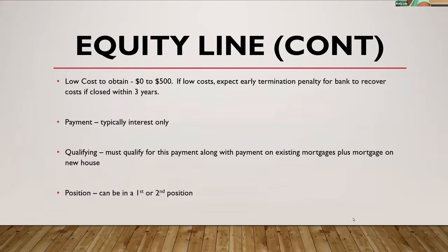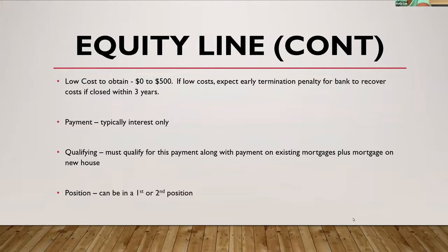Qualifying-wise, with the bridge loan option, you've got an interest-only payment on one loan that might be $600,000, so that payment's probably going to be low. With an equity line, we have to count the mortgage on the existing home, the new mortgage on the new home, and then a payment on this equity line to get them into the next house. So some buyers may not be financially sound enough to do this, and a bridge loan might be the best option for them.